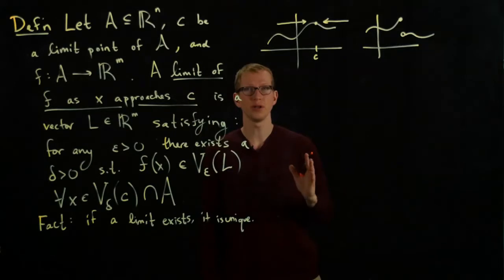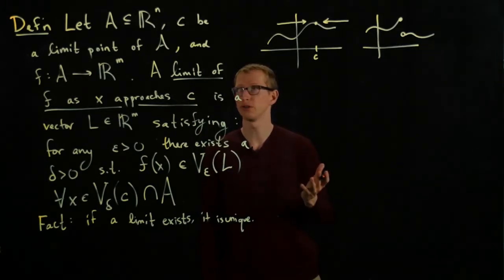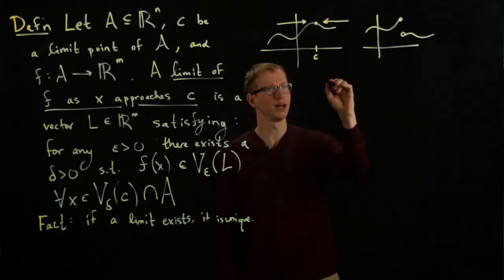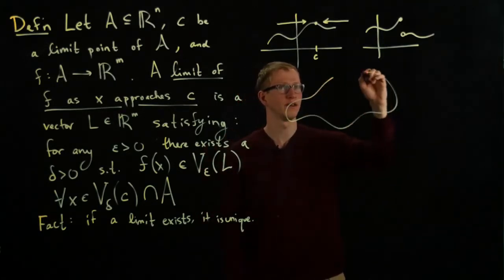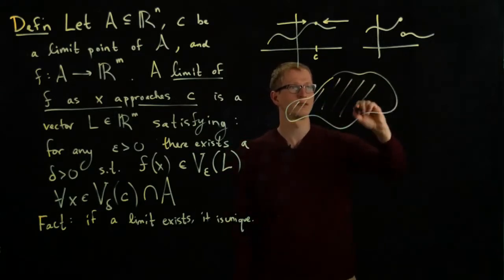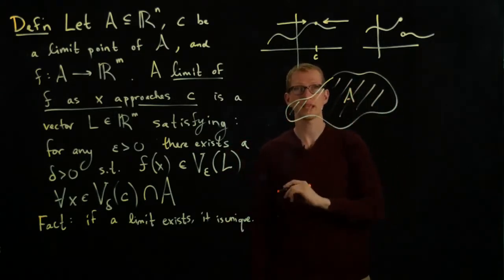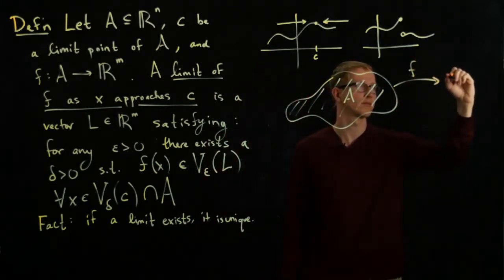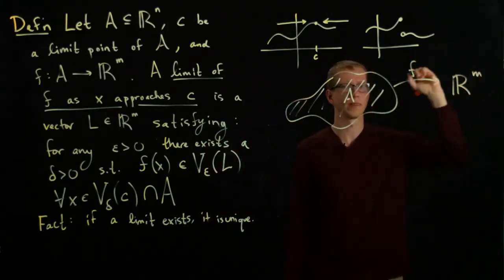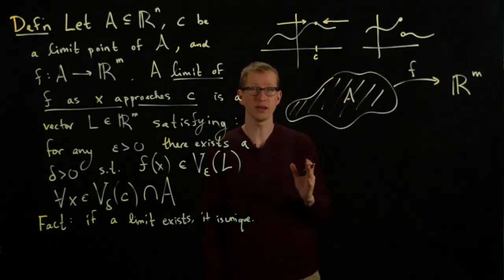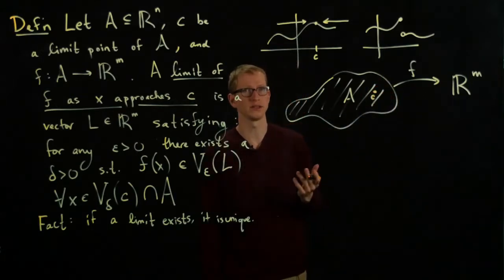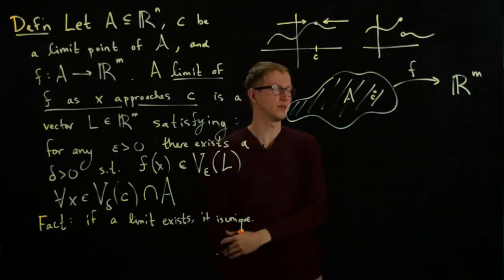Now, when you have multi-variables, when your domain has more than one dimension, for instance, take a blob as follows. Suppose this is A, and you have a function defined on A. Let's say it goes to R^m. And if you pick a point that's a limit point of A, so for instance, C could be in A, and as long as it's not an isolated point of A, then it's a limit point.